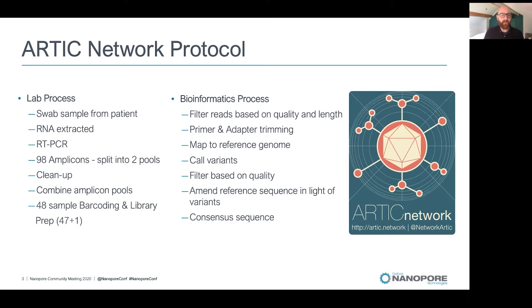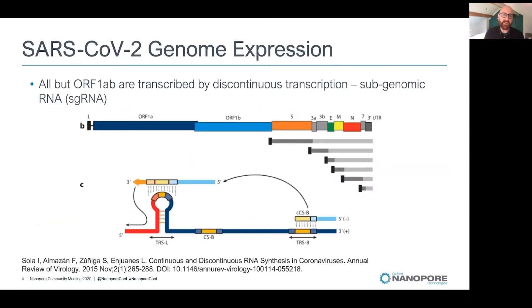Before I continue to talk about Periscope, I wanted to give a brief overview of how coronaviruses are thought to express their genome. The coronavirus is a 30,000 base pair long positive-stranded RNA virus made up of several open reading frames. ORF1A and 1B are translated to protein directly from the genome, but the more three-prime open reading frames are translated from RNA intermediates termed subgenomic RNAs.